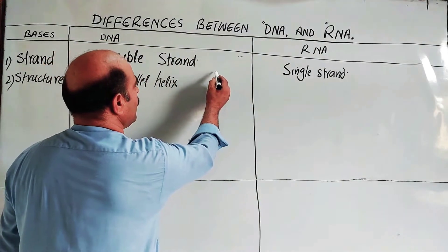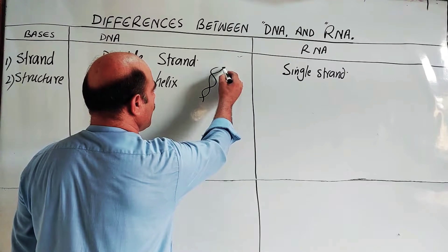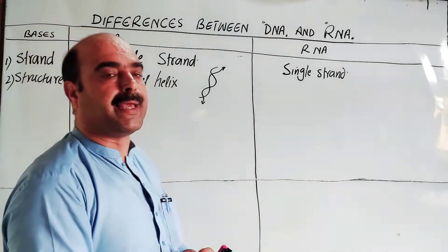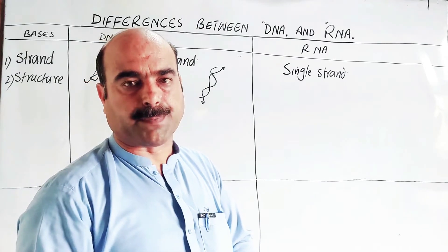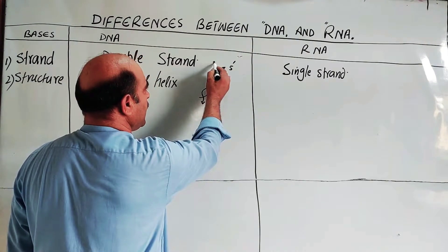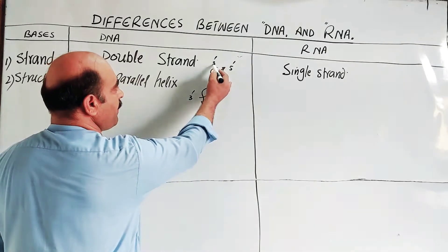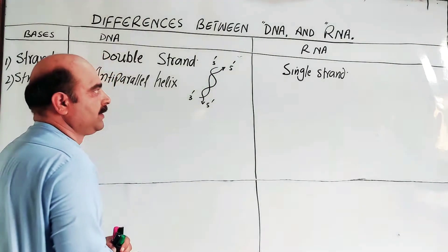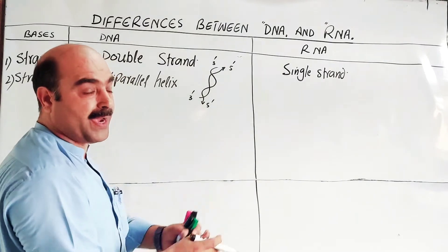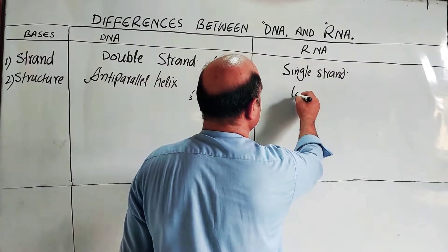In the anti-parallel structure, the two strands run in opposite directions. One strand runs in the 5' to 3' direction, and the other strand runs in the 3' to 5' direction. If one strand is 5' to 3', the complementary strand is 3' to 5'. This is what makes it anti-parallel. If both strands ran 5' to 5', that would be parallel — but DNA is anti-parallel.